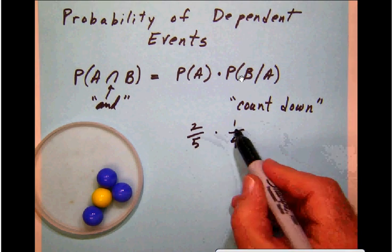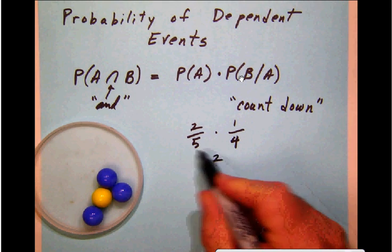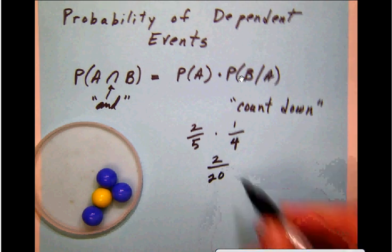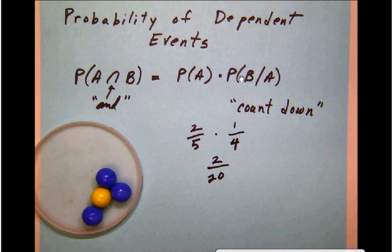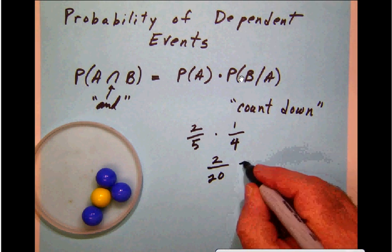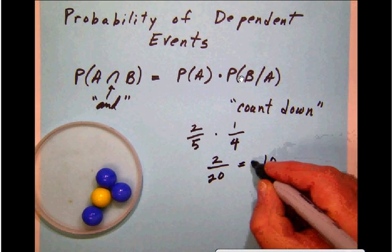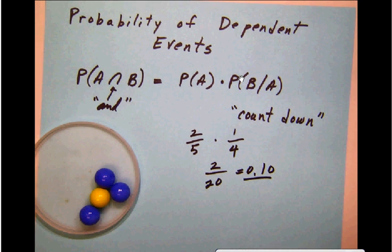So the probability that we want is a multiplication rule: 1 times 2 is 2, 5 times 4 is 20, so this is 2/20, which reduces to 1/10, which becomes 0.10 as a decimal. That gives us the probability of drawing two yellow marbles.